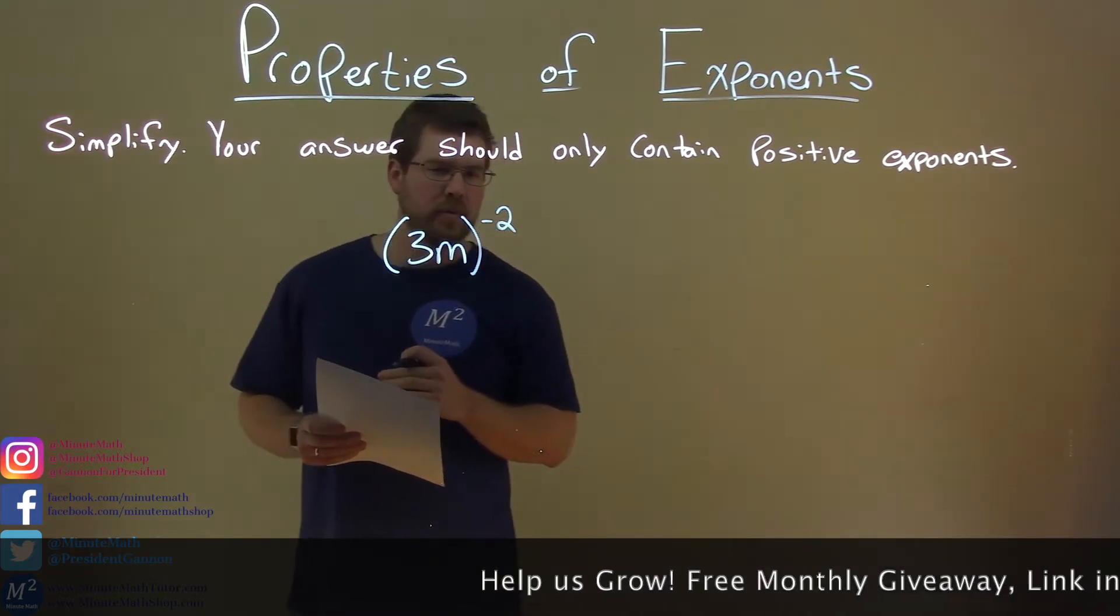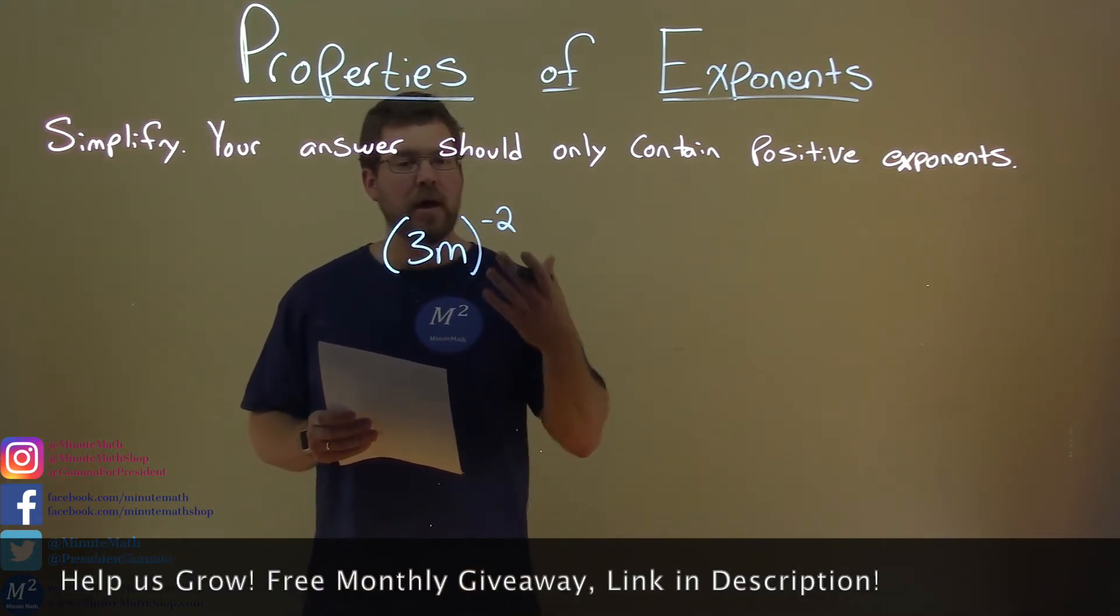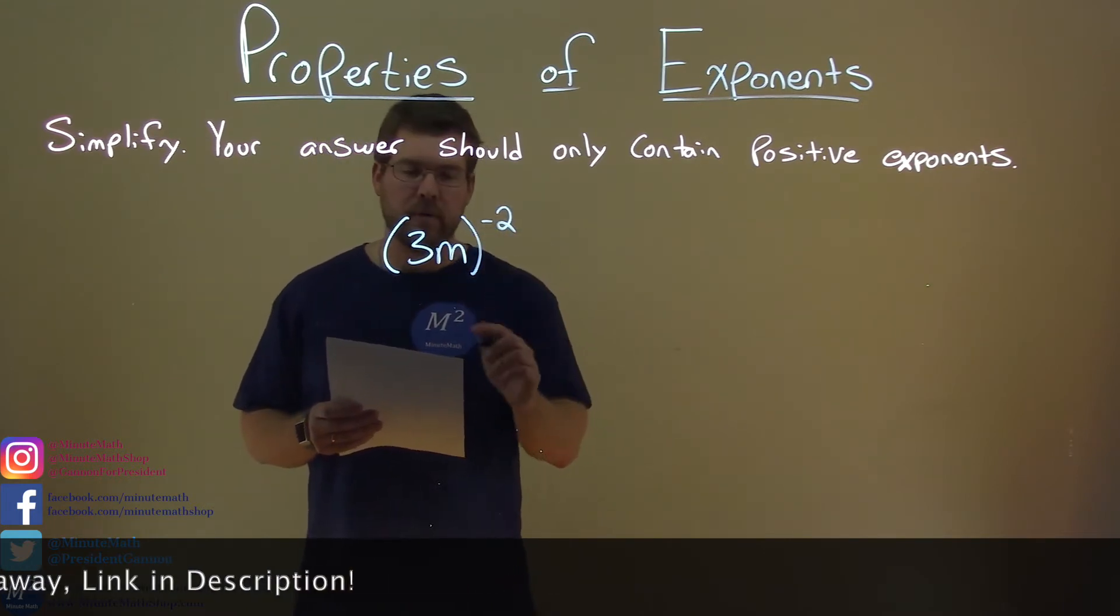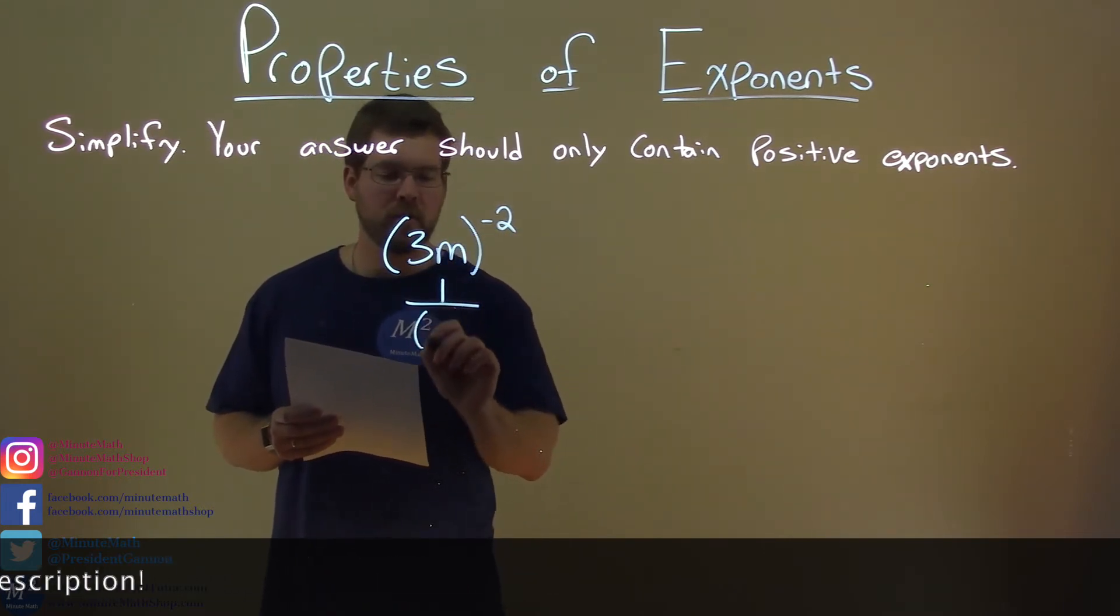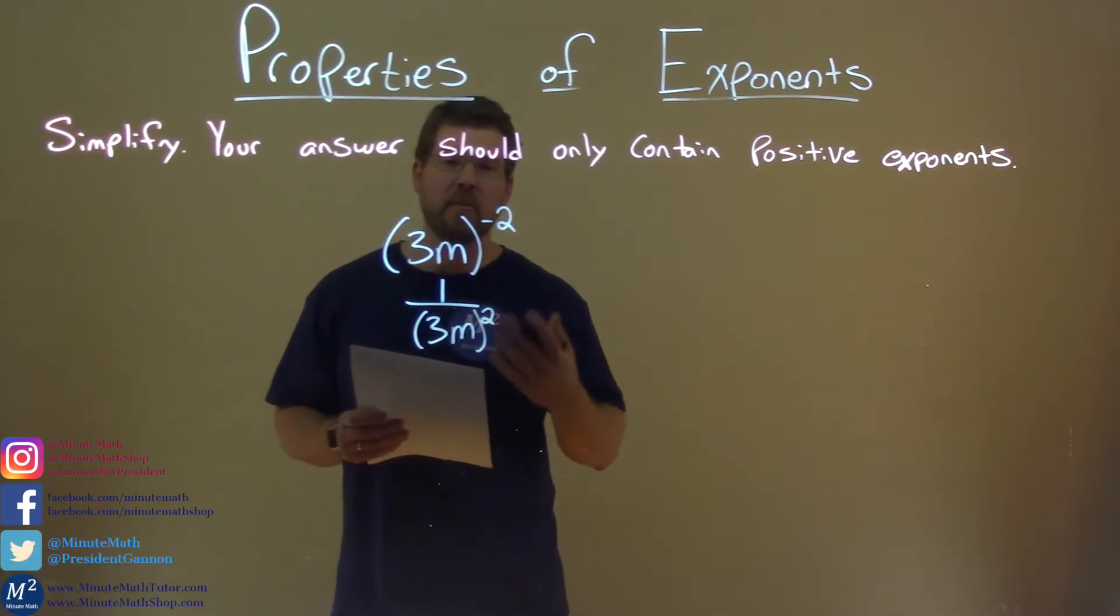Well first thing I want to do here is this negative 2 power we know is the same thing as this as a fraction, the 3m to the denominator, the positive 2 power. So we can rewrite this as 1 over 3m to the positive 2 power and then we need to continue.